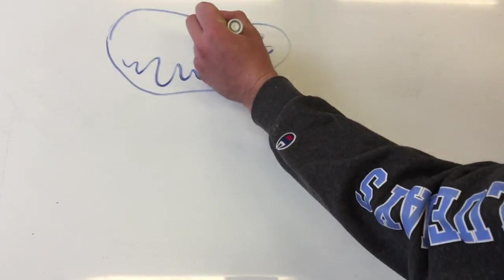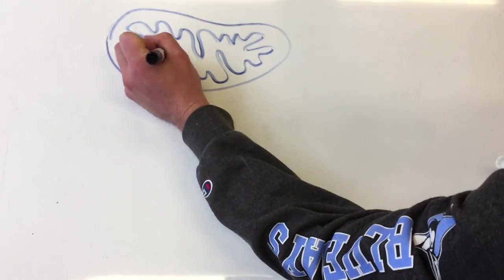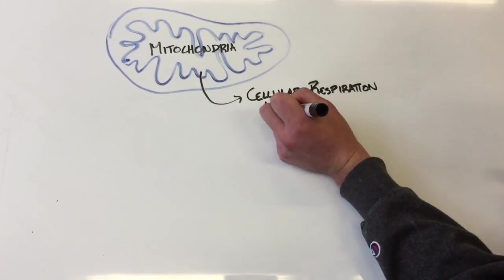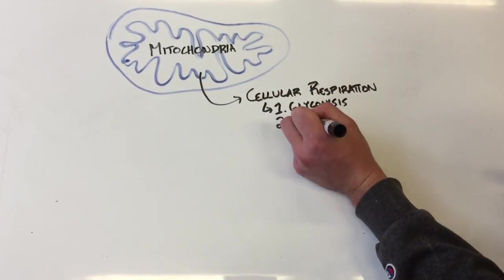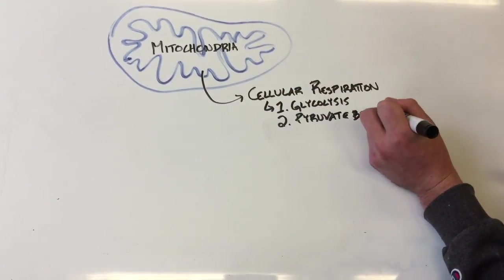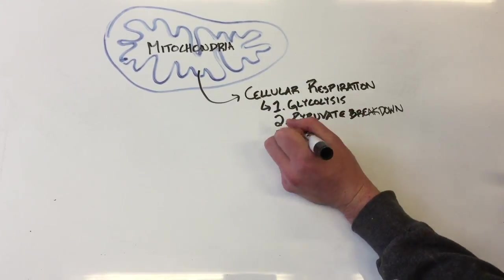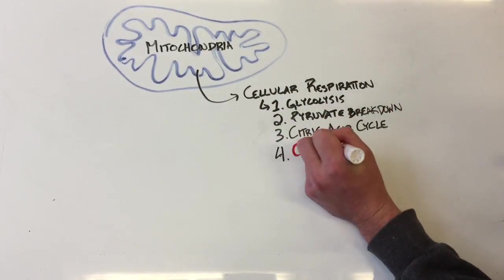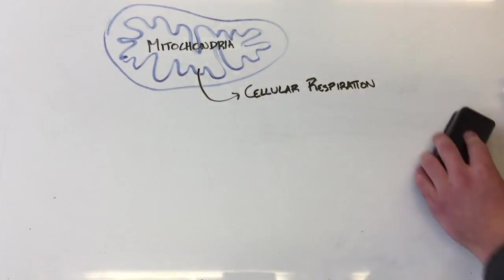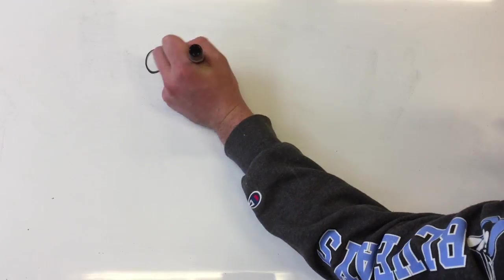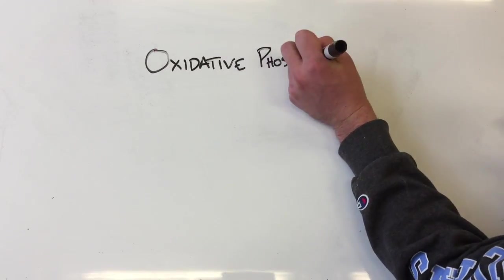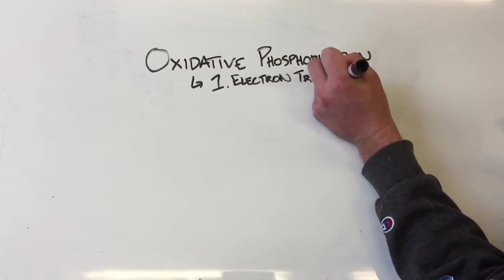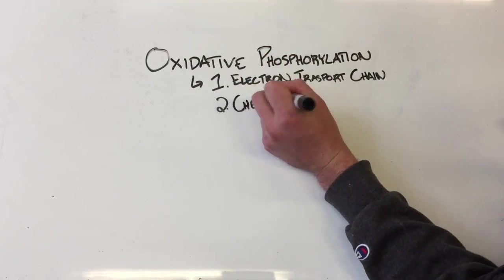Oxidative phosphorylation is part of the cellular respiration process, which takes place inside the mitochondria. It is the final step in cellular respiration, just after the citric acid cycle. It is commonly broken down into two steps: the electron transport chain and chemiosmosis.